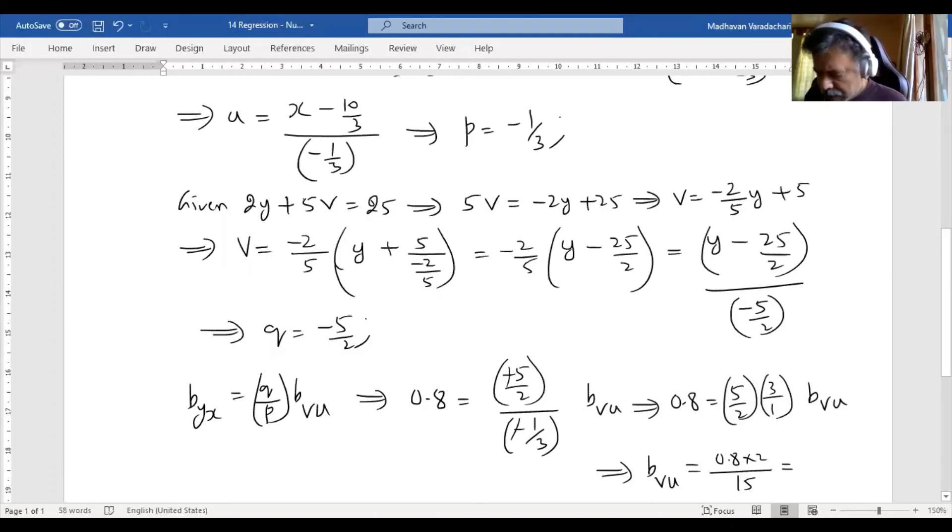Which is 0.8 into 2 divided by 15. We get 0.10666, so we'll make it 0.107. That is your value of b_vu.